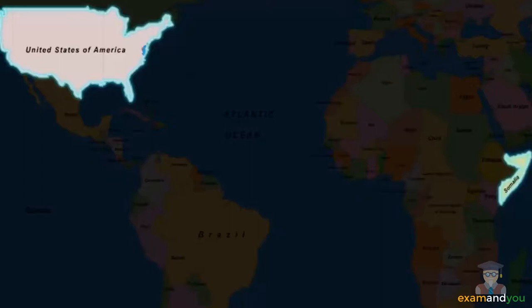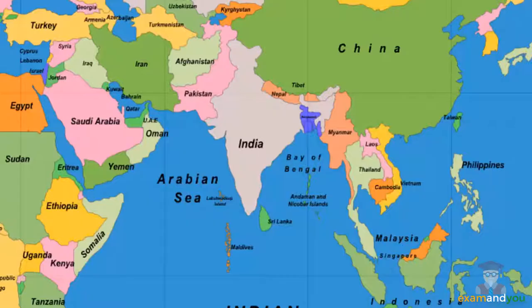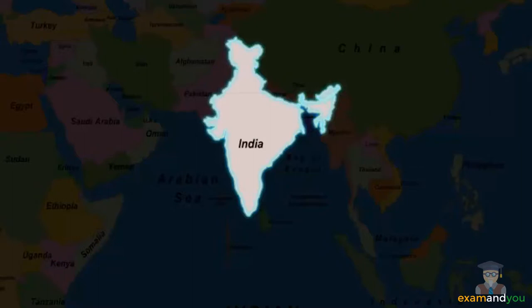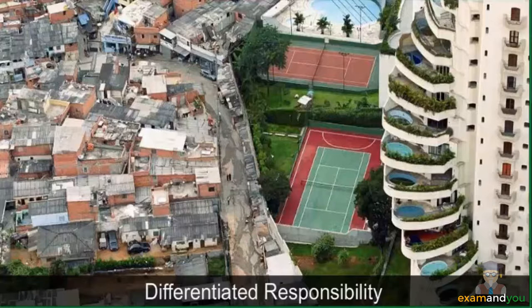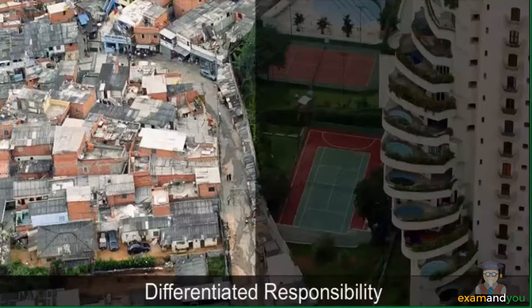Similarly, the richest 5% of Indians consume more resources than the poorest 25% of the population. However, the responsibility for the protection and conservation of the environment is not shared in proportion to the resources consumed. People who consume less and have less access to resources are often blamed for the degradation of the environment.